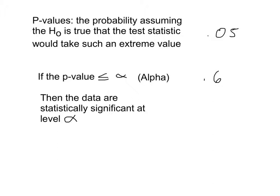And so if the p-value is less than or equal to your alpha value, the standard alpha value is about 0.05, or it can be 0.01, but usually it's this one. Then the data are statistically significant at level alpha.